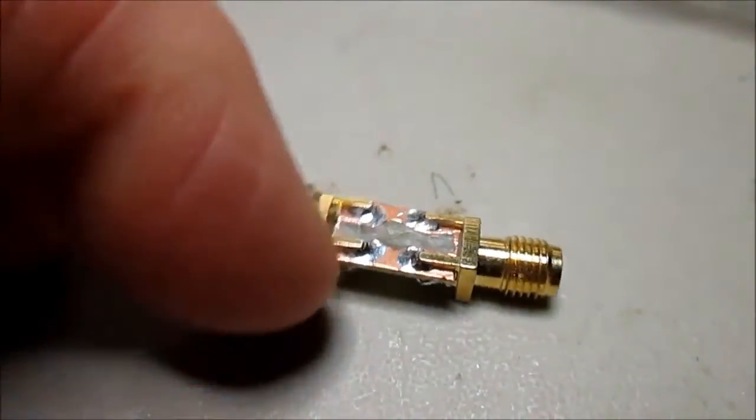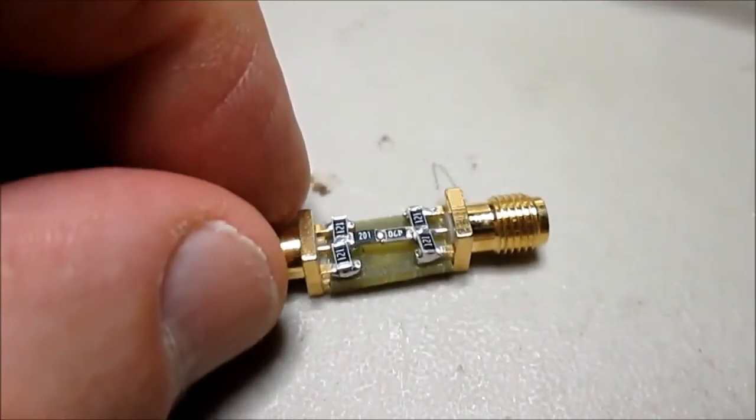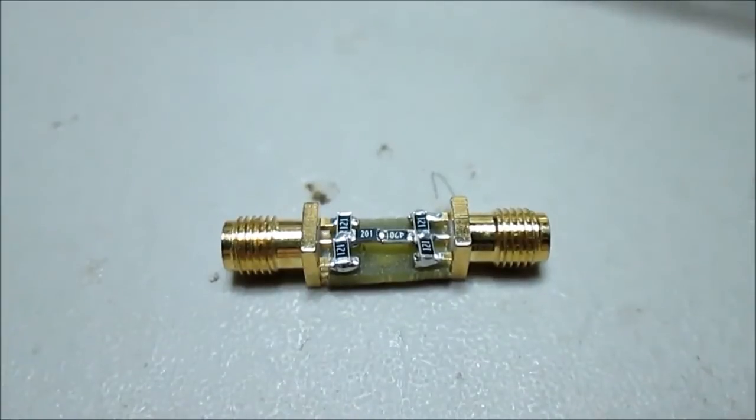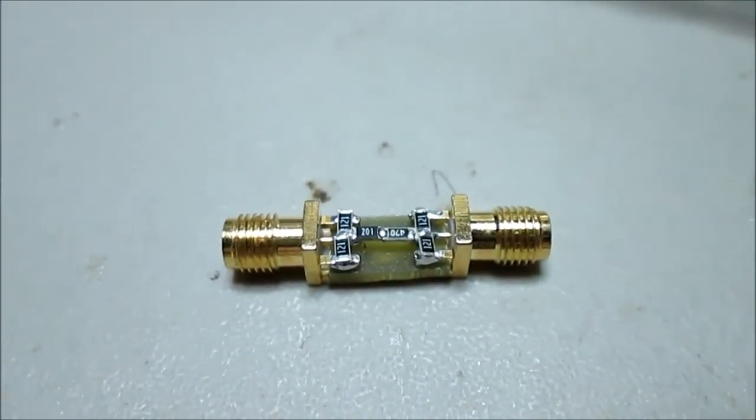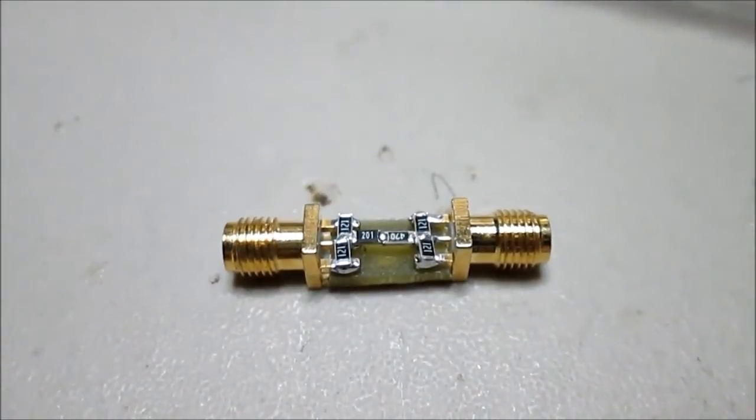But anyway, this is the way they're attached to the bottom of the board, just solder them on. And you've already seen the top of the board. That thing is extremely small, it's very very tiny. But that's it in a nutshell as far as the actual construction build of the attenuator.